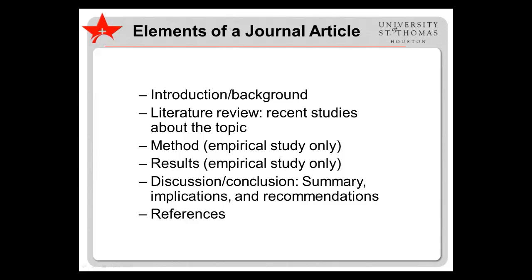In both empirical and non-empirical articles, an ending section — called the discussion, conclusion, summary, or something similar — will include a summary of the information presented in the article, a discussion of implications, and typically recommendations, including recommendations for future research on the topic. The references are usually the last element of a journal article. However, sometimes an appendix will include such information as a copy of the instrument developed for the study.